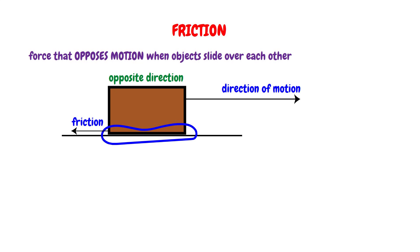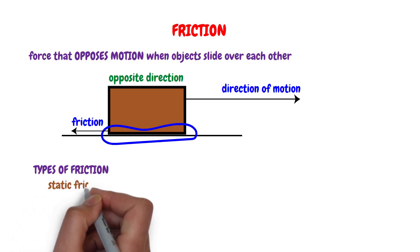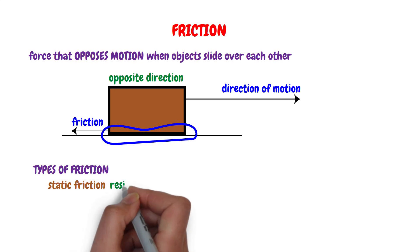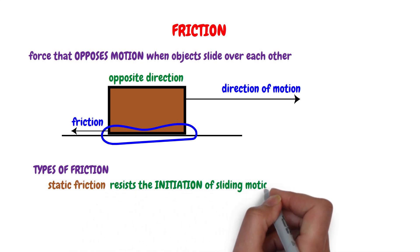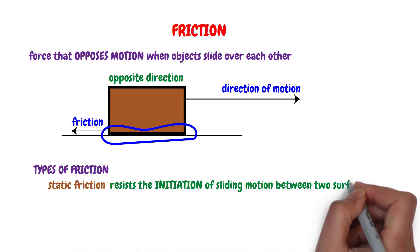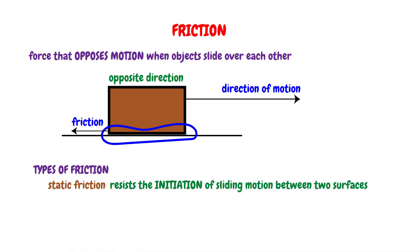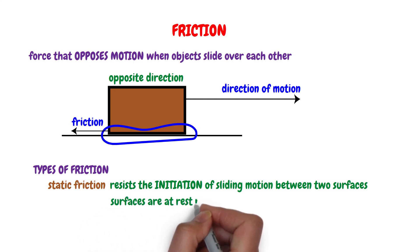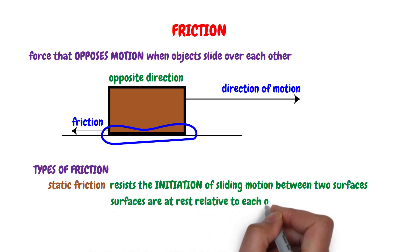Now the types of friction. There are four types of friction. The first type is static friction. Static friction is the force that resists the initiation of sliding motion between two surfaces. This type of friction occurs when the surfaces are at rest relative to each other.